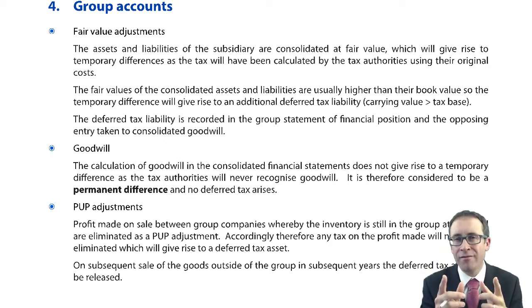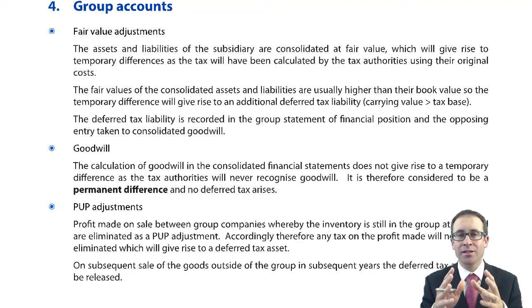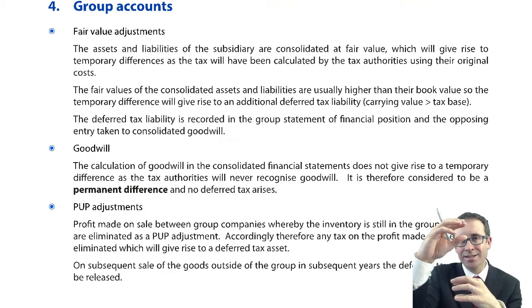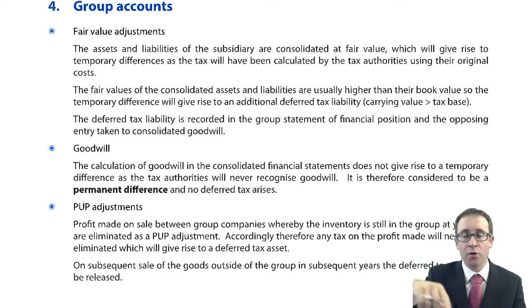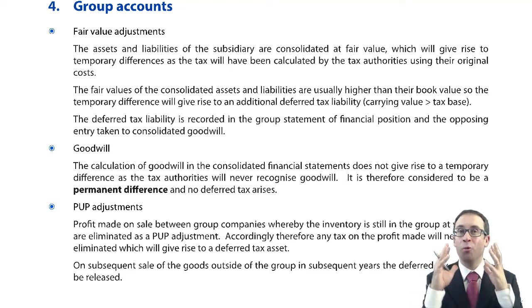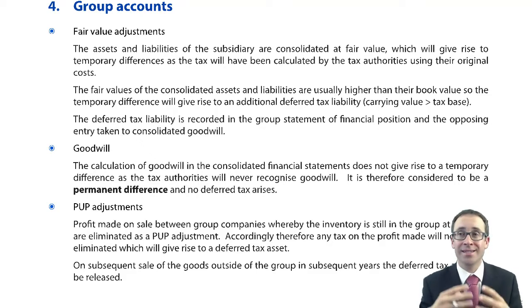We've made various adjustments. However, when we look at the tax balances, the tax balances are based upon the legal form. The parent is taxed, the subsidiary is taxed. So we just need to be careful that when we're looking at the group accounts, the tax balances reflect the substance as well. Because we've made adjustments to the assets, the liabilities, the income, the expense, we might need to make adjustments to the tax expense, the tax assets, and the tax liabilities to reflect the substance.